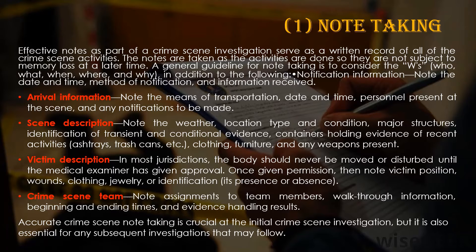First, arrival information: note the means of transportation, date and time, personnel present at the scene, and any notifications to be made. Then comes the scene description: note the weather, location, type and condition, major structures, identification of transient and conditional evidence, and containers holding evidence of recent activities — for example, ashtrays, trash bins, and many more.